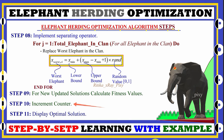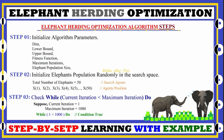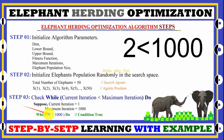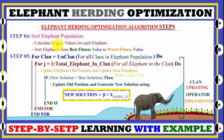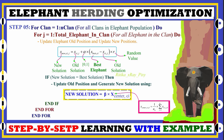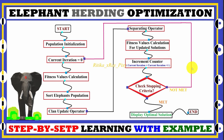Then we increment the counter — current iteration equals current iteration plus one. If current iteration (now 2) is still less than 1000, we repeat the loop: again sort elephants based on their fitness values from best to worst, and again perform the clan updating operator and separating operator.